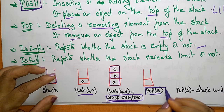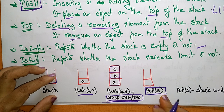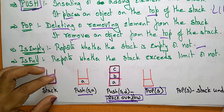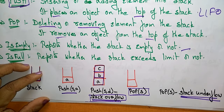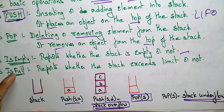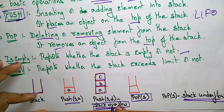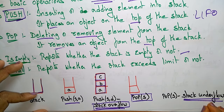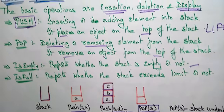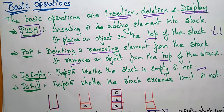For pop, we just write pop(stack) — no need to specify which element, because pop always removes the topmost element by default. If the stack is empty and you still try to pop, there are no elements present, so it leads to stack underflow. Stack underflow means you are trying to remove an element when the stack is empty.